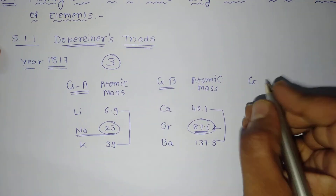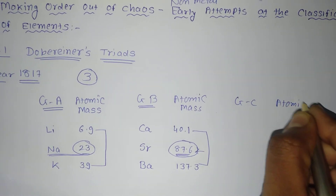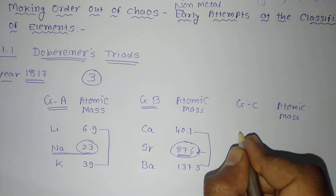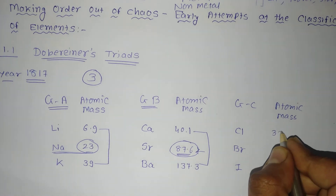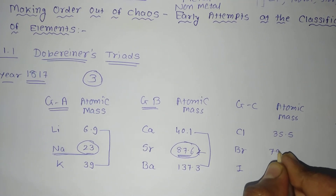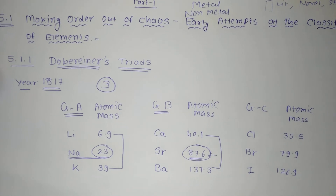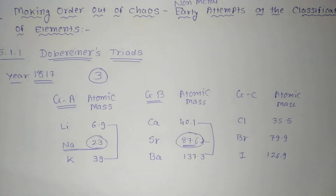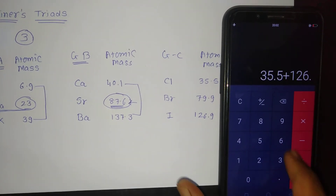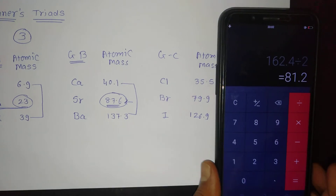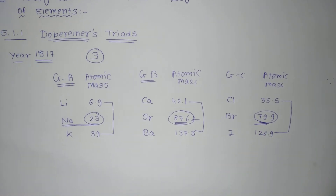For Group C with chlorine, bromine, and iodine: (35.5 + 126.9) ÷ 2 = 81.2, which is near about 79.9, the atomic mass of bromine. So the average of chlorine and iodine gives approximately the atomic mass of bromine, the middle element. These are the three triads identified by Dobereiner. In each case, the average of the atomic masses of the two outer elements is roughly equal to the atomic mass of the middle element.